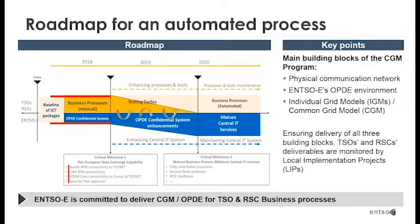The first milestone has given us a pan-European data exchange capability. We have started working on the physical communication network — four TSOs are connected to it, which is currently a dedicated development for the CGM program. Individual grid models are put onto the platform, giving RSCs the possibility to have a common grid model. Since it's a large participation, we have set up a monitoring system for local implementation projects. Each TSO and RSC has appointed a CGM manager to track progress of their deliverables.